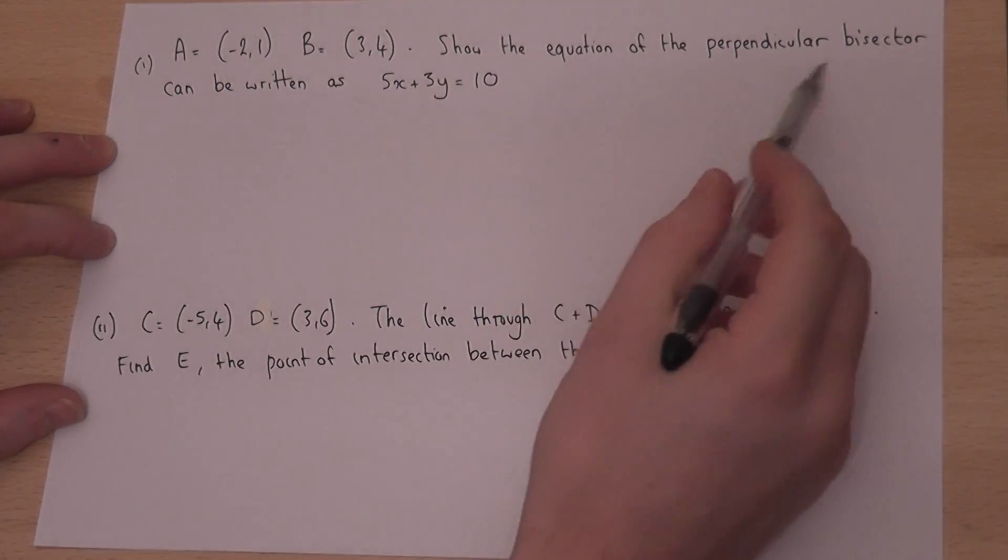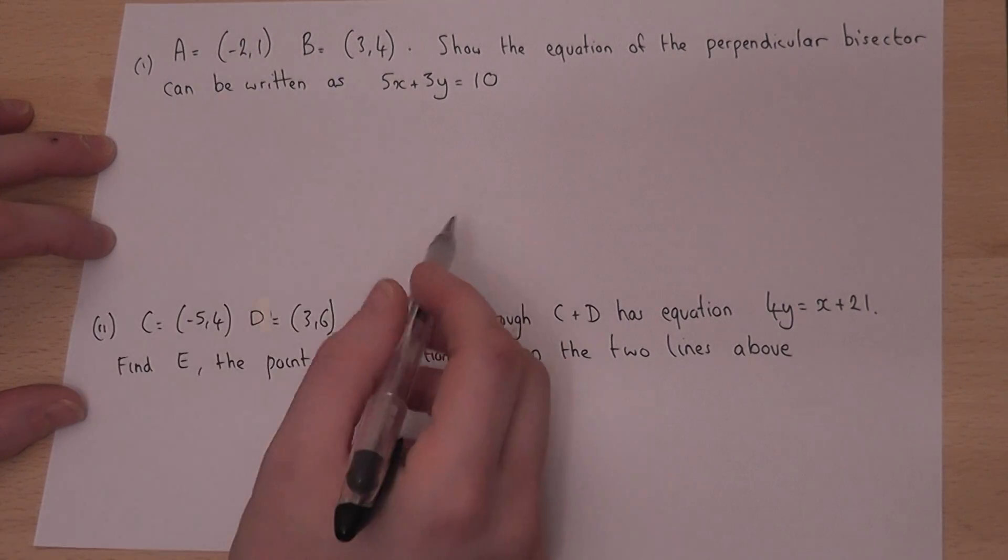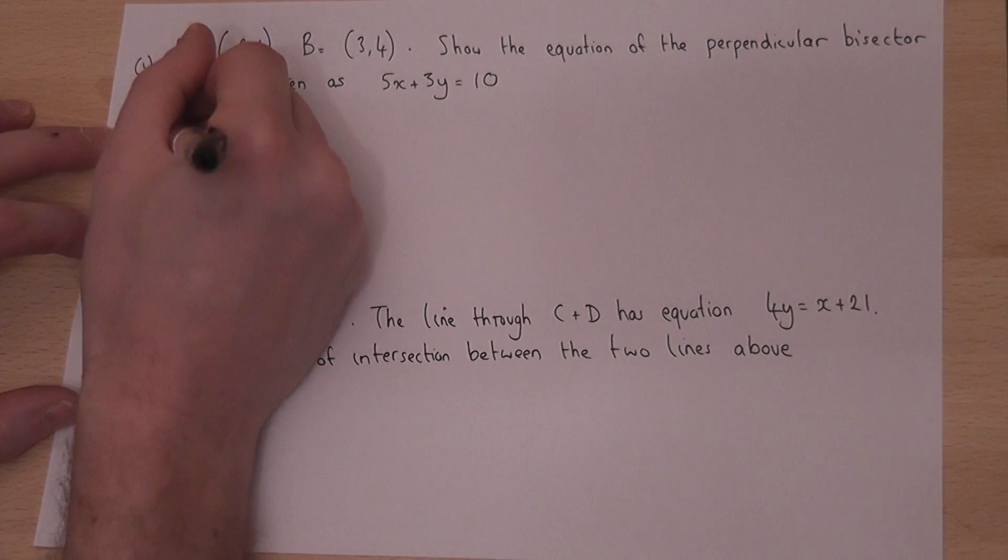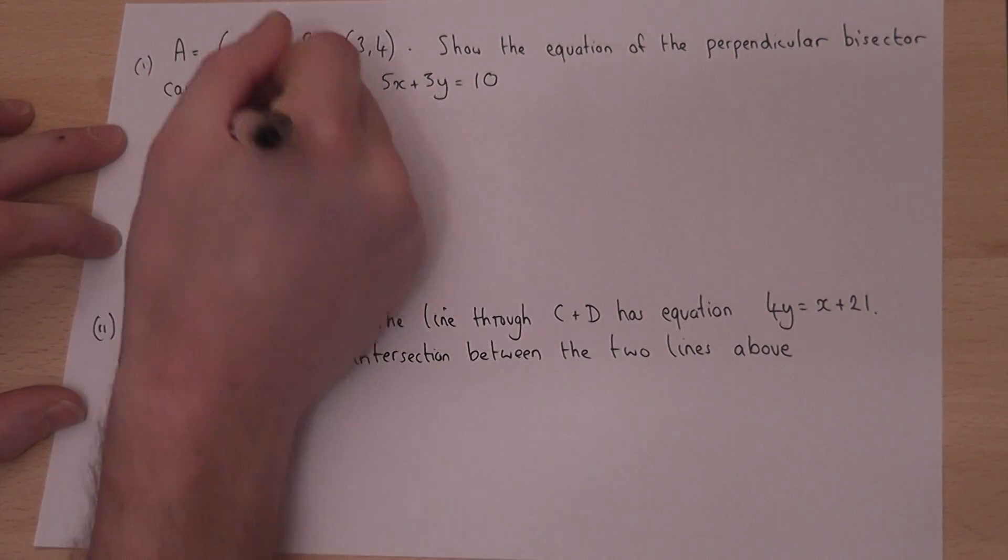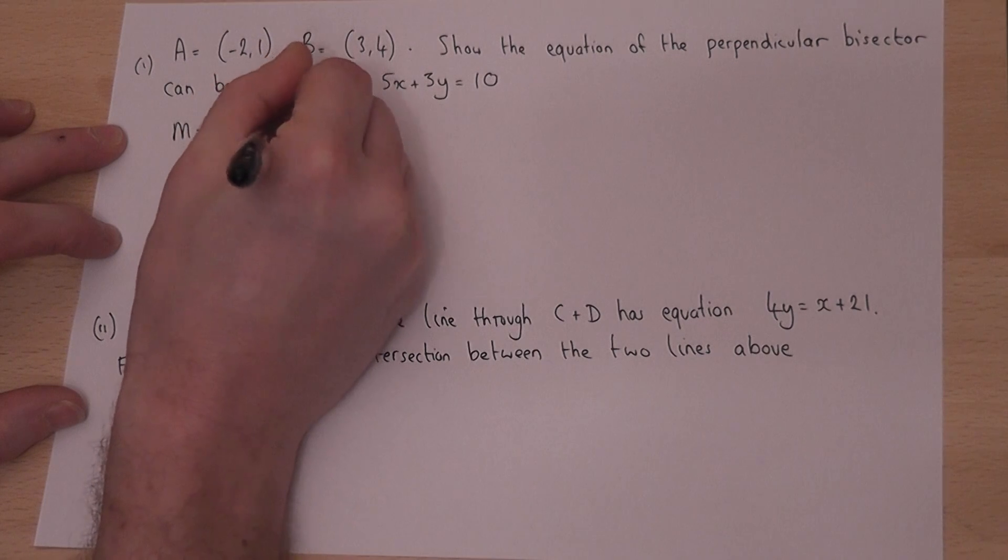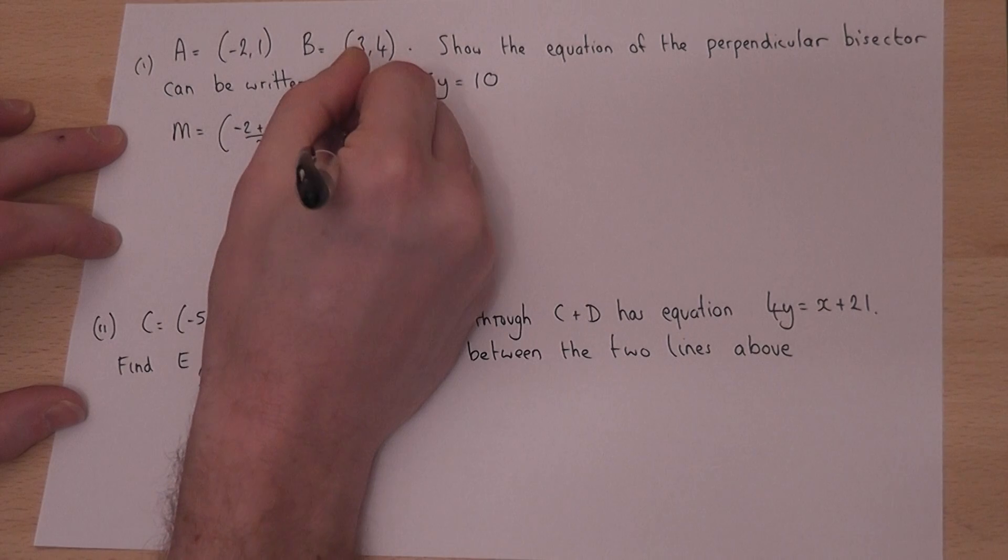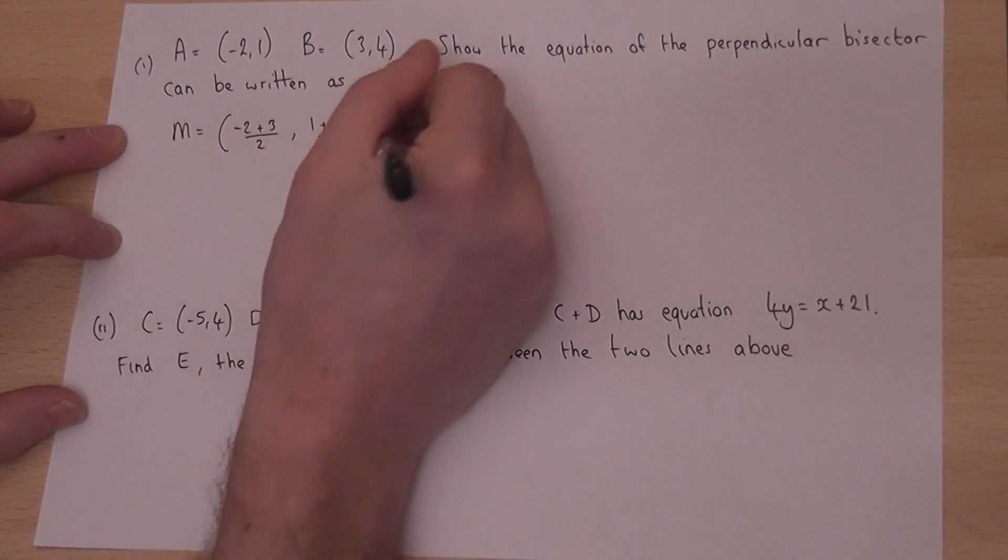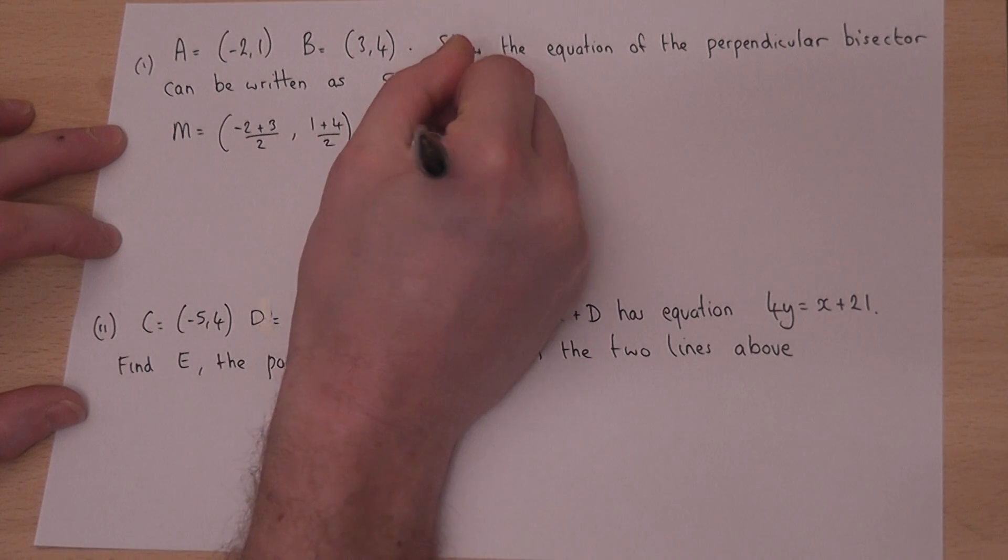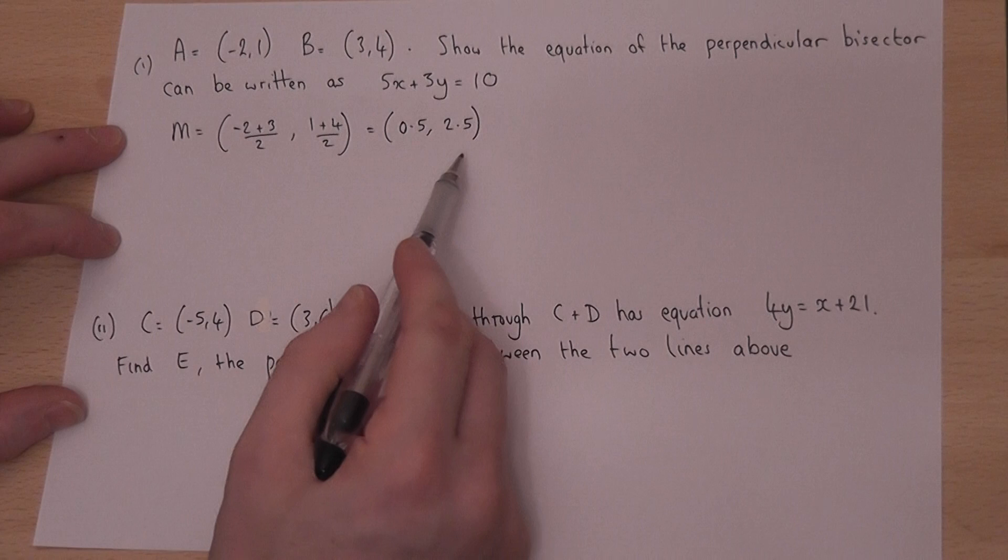A bisector passes through the midpoint of two coordinates. So the midpoint of A and B can be worked out, so if I call that M, then to work it out we find the mean of the x-coordinates and the mean of the y-coordinates. So that just becomes a half and 2.5. We could use either decimals or fractions here.